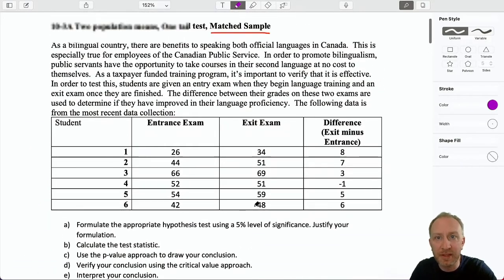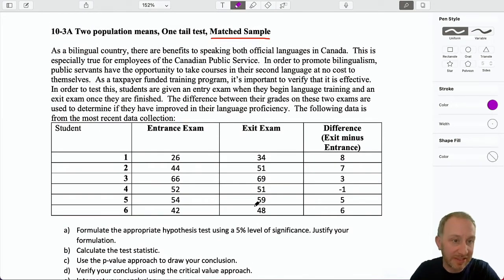If we come to this problem here, as a bilingual country, there are benefits to speaking both official languages in Canada. This is especially true for employees of the Canadian Public Service. In my past life before I was an instructor, I worked with our federal government as an economist. To promote bilingualism, public servants have the opportunity to take taxpayer-funded courses in their second language. As a taxpayer-funded program, it's important to verify that it's effective. Students are given an entrance exam at the beginning of language training and an exit exam at the end. The difference between their grades is used to determine whether they've improved in their language proficiency.